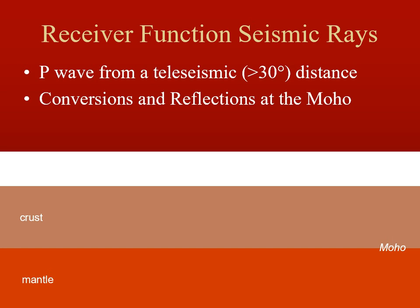I'm going to show some seismic rays representing energy coming up through the mantle and then starting to interact with the Moho — the discontinuity between the crust and the mantle. There will be some conversions as well as some reflections at the Moho. Starting with just a simple direct P wave: the energy comes in, refracts, and changes its angle because the velocity is faster in the mantle than in the crust. That's our typical P wave energy that would be recorded.